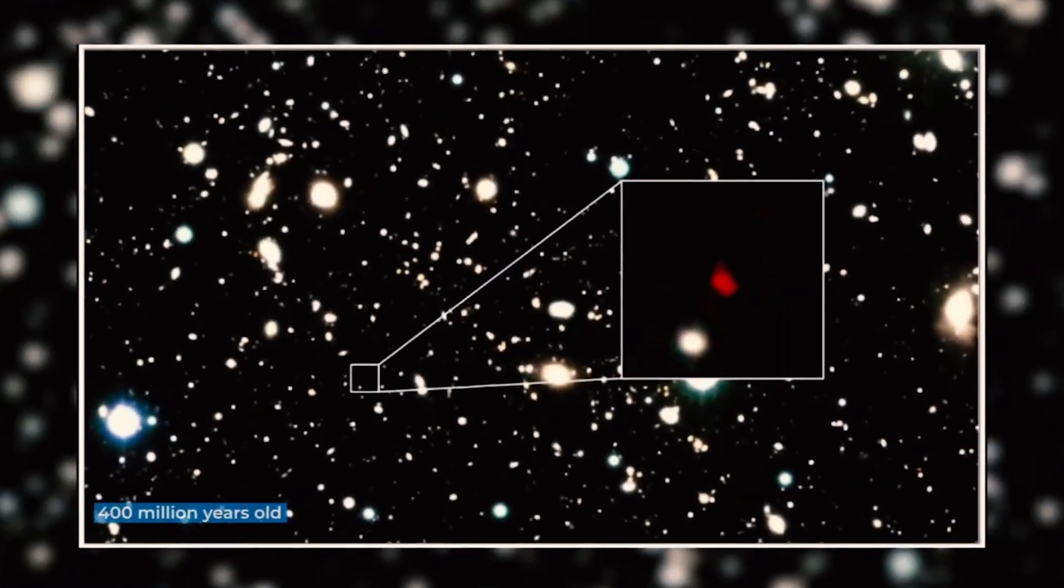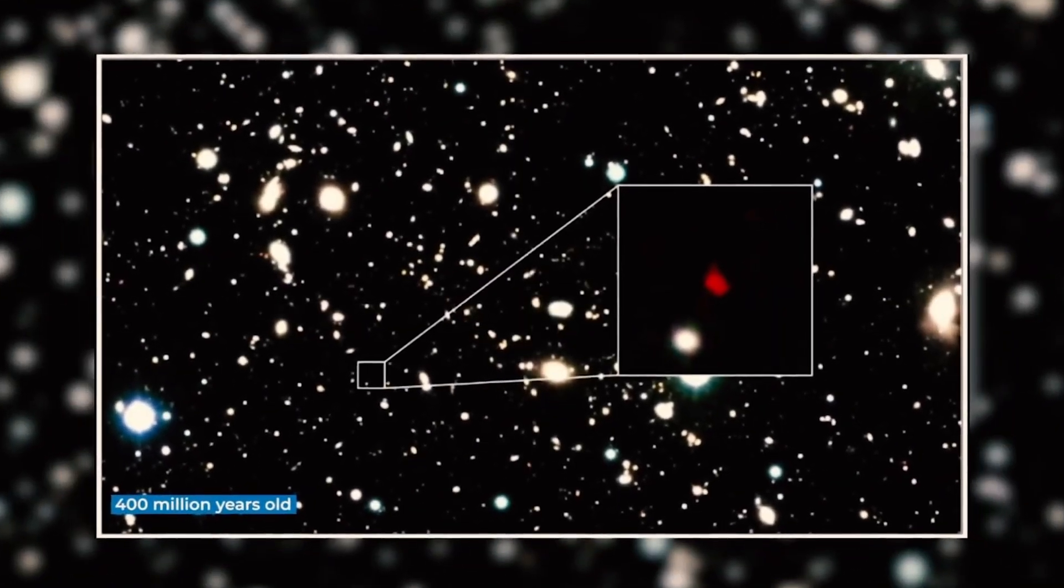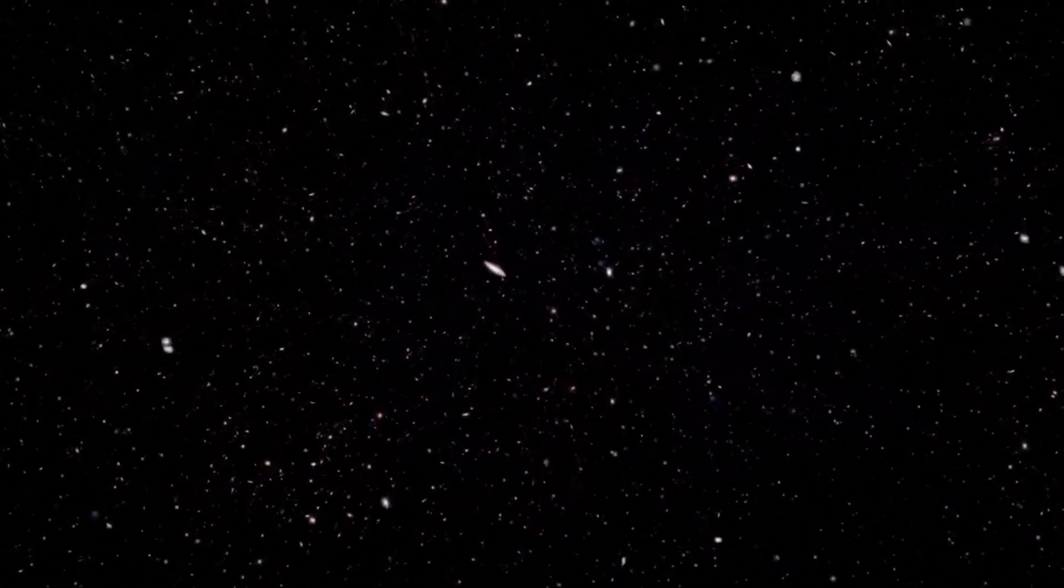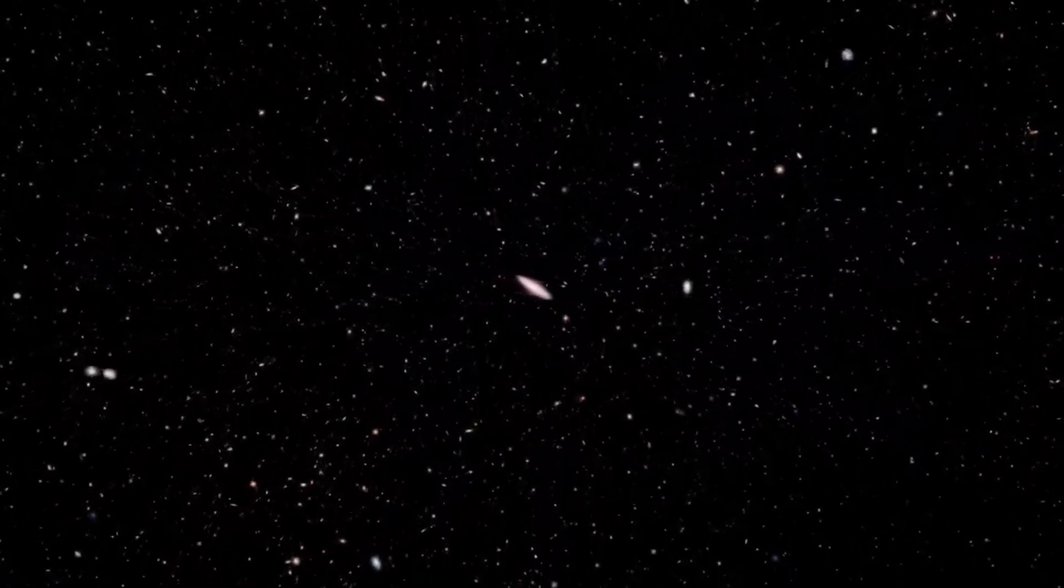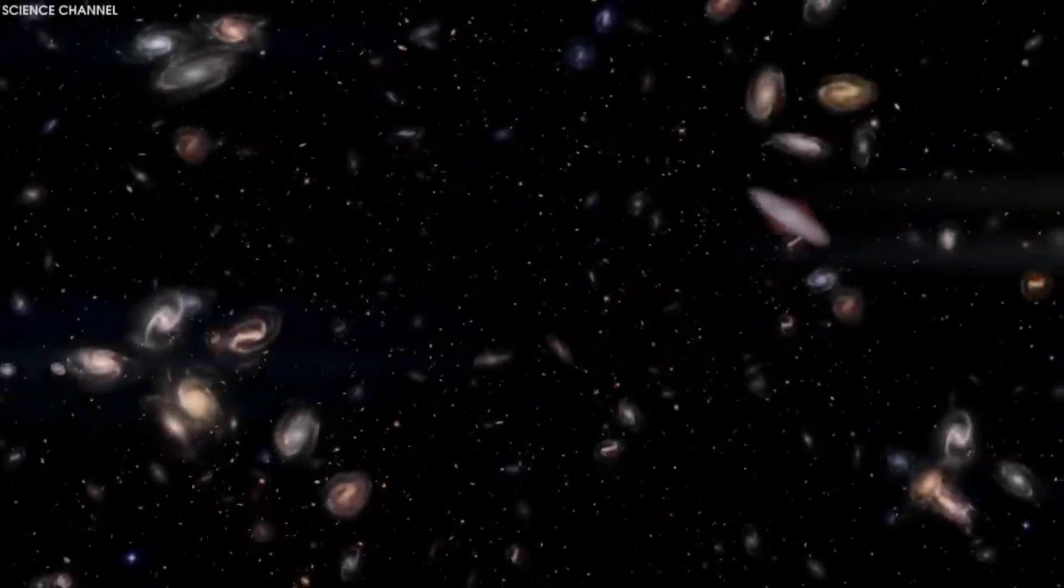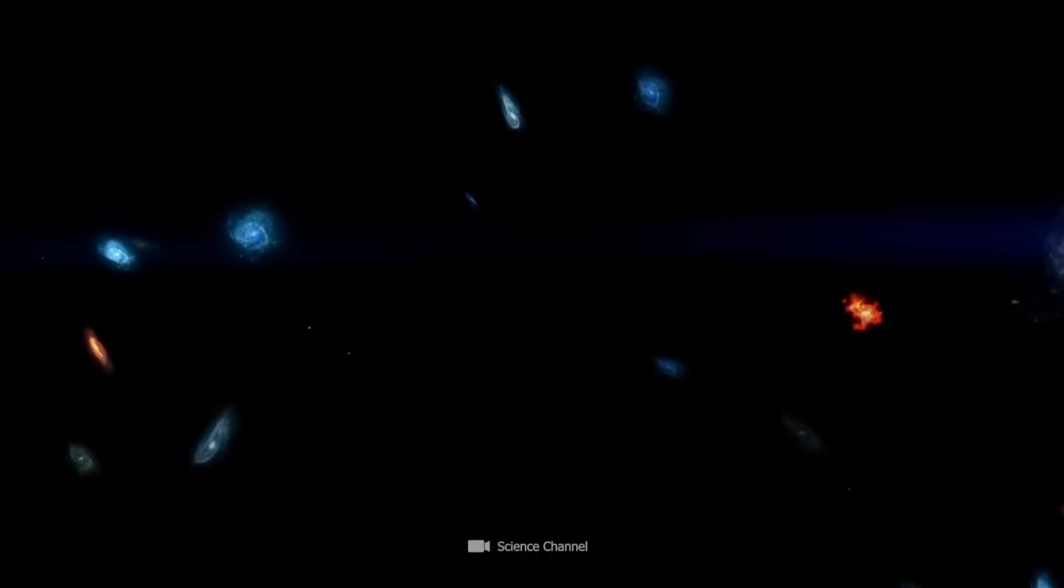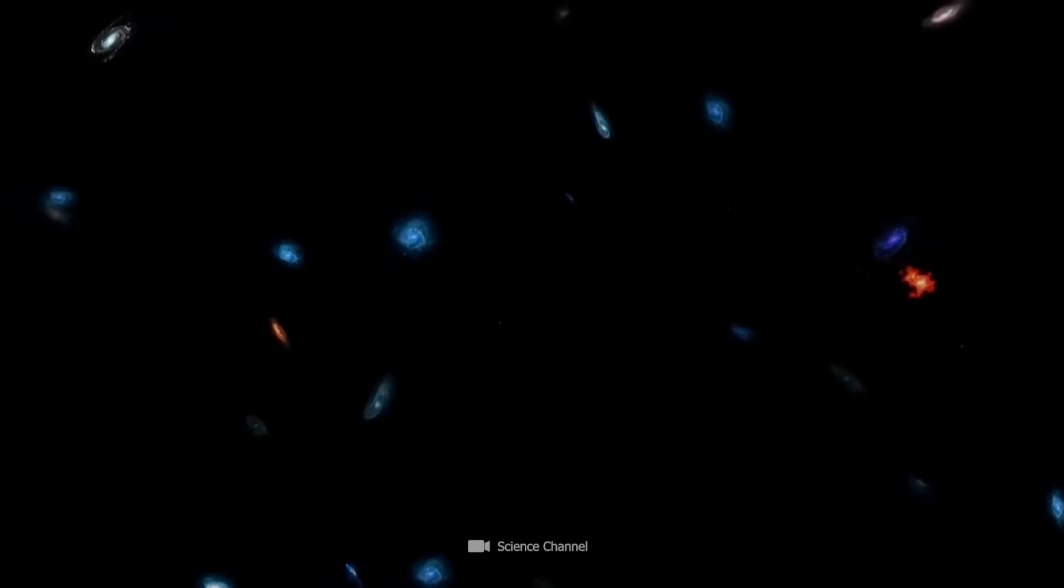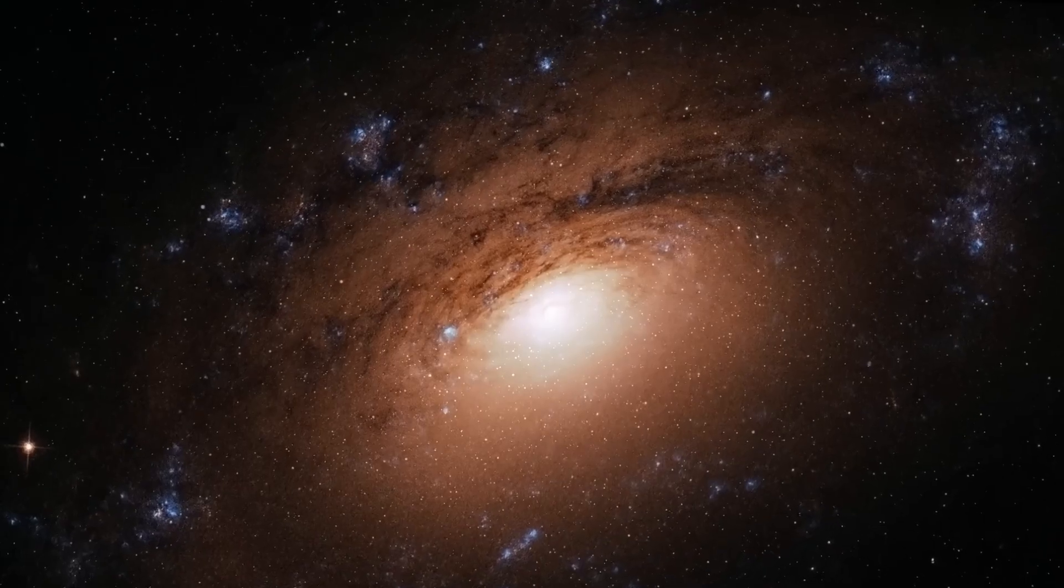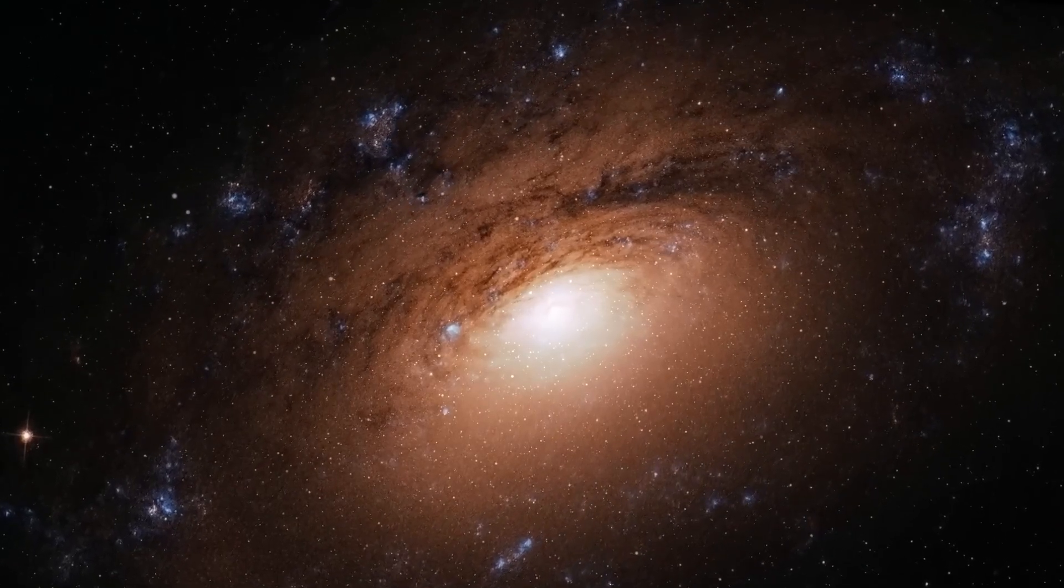These rain down on HAWC, which is a peculiar kind of telescope consisting of 300 water tanks, each filled with 200 metric tons of water. The subatomic particles from the collision between a gamma ray and a molecule are moving so fast that when they enter water, they actually move faster than the speed of light through water, which is slightly slower than through a vacuum or through air.